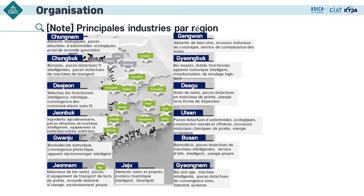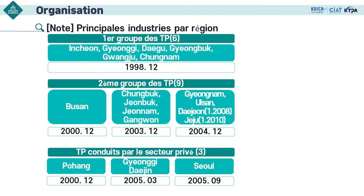Les principales industries diffèrent selon les régions, puisque chaque région a ses propres structures industrielles et ressources. Il y a trois groupes de technoparcs : le premier groupe, le deuxième groupe et le groupe conduit par le secteur privé.